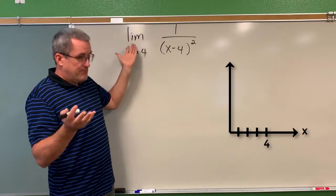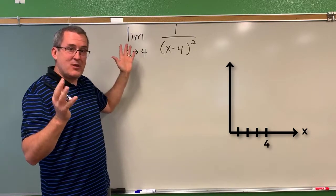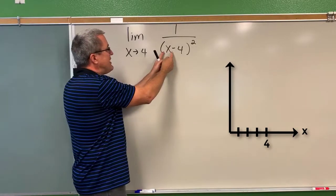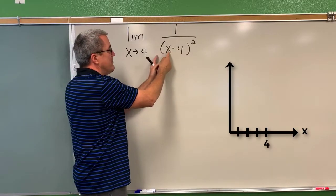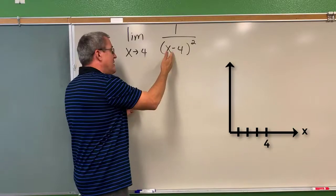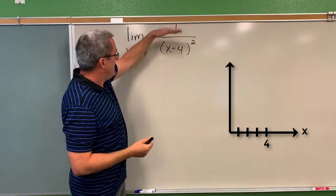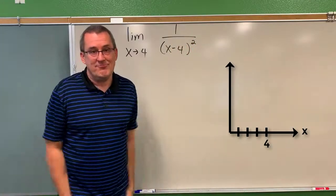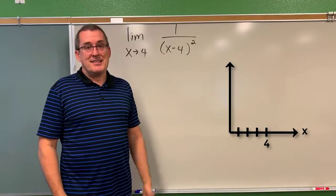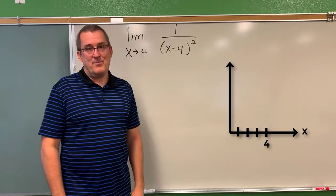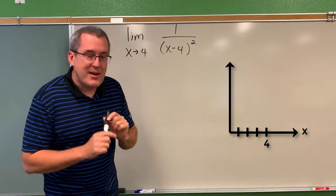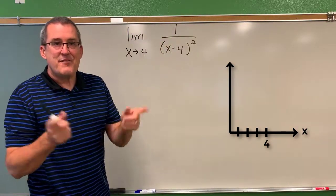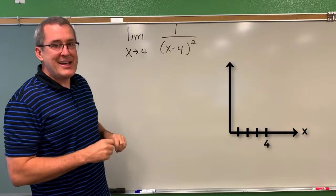Why am I saying it that way? Because if x was equal to 4, 4 minus 4 would be 0, 0 squared would be 0, and 1 divided by 0 is not something we can figure out — it does not exist. So instead, what I want you to think about is how does this function behave for values of x nearby to 4?